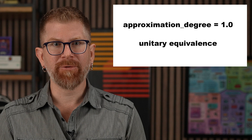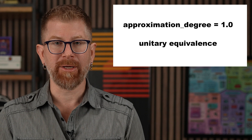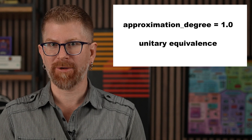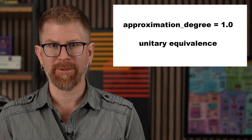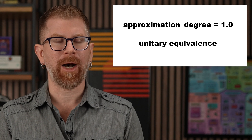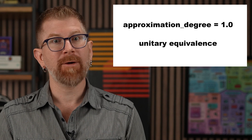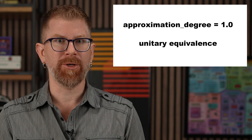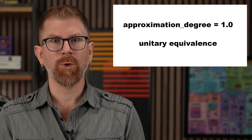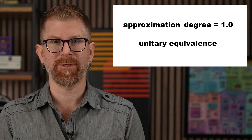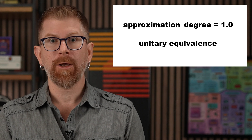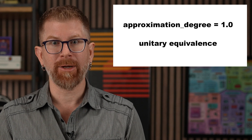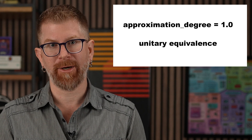We have a breaking change alert for the transpiler. From now on, approximation degree equals 1.0 is the default setting, preventing users from accidentally breaking unitary equivalents when using optimization level 3. Furthermore, users wishing to make use of the unitary approximations will have to put in a number less than 1.0, with 0.0 or none being the maximum level of approximation up to the specific backend's error rate.